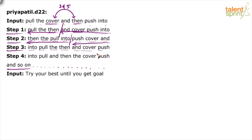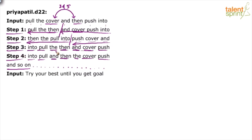Look at step 4. Into is as it is, pull as it is, and has come here, then is as it is, the has come here. Cover and push are as they are. So in step 4, the third and fifth positions have been interchanged — that is, 'the' and 'and'. Step 4 is obtained by interchanging the third and fifth positions in step 3.